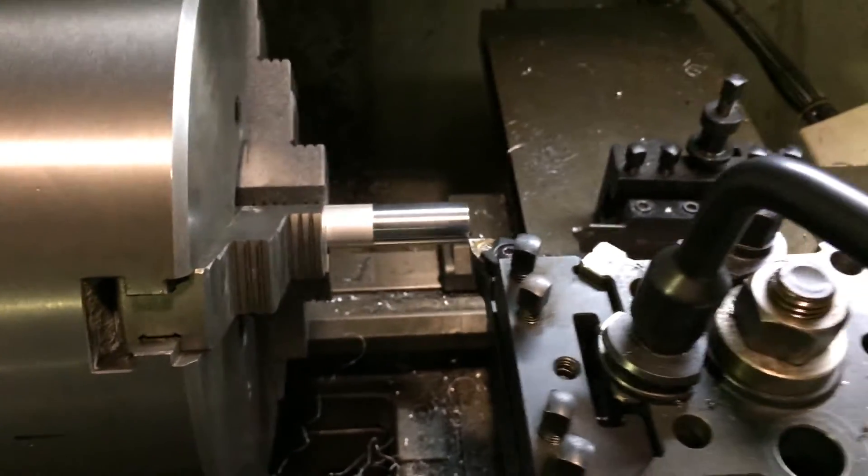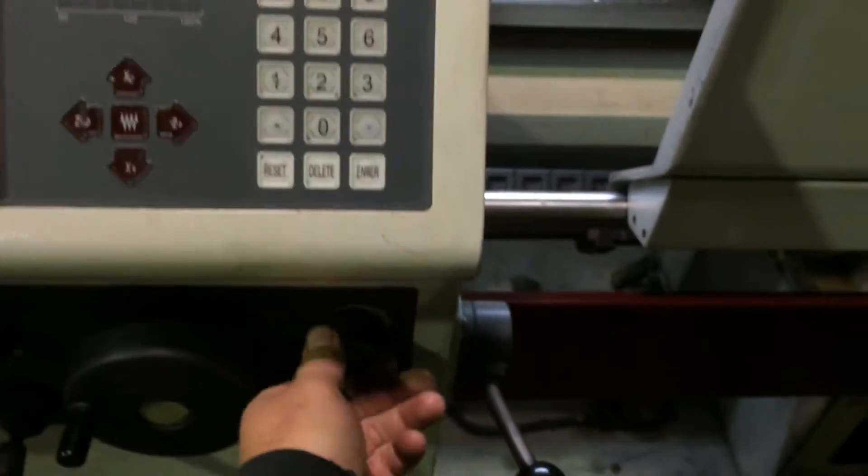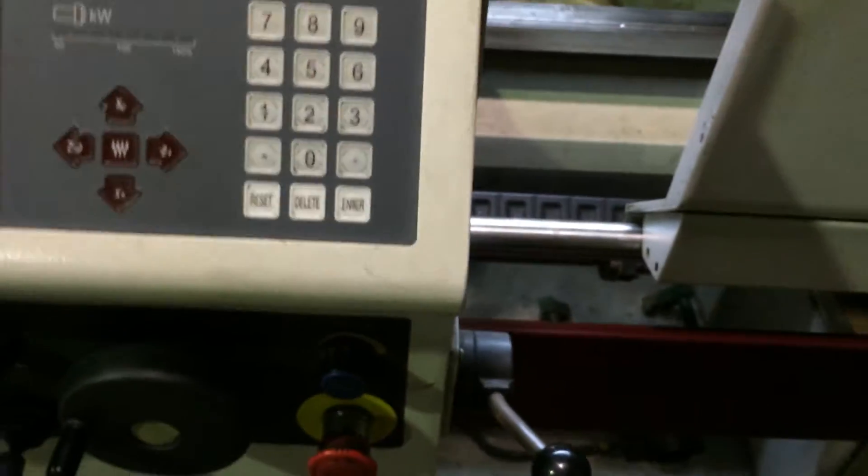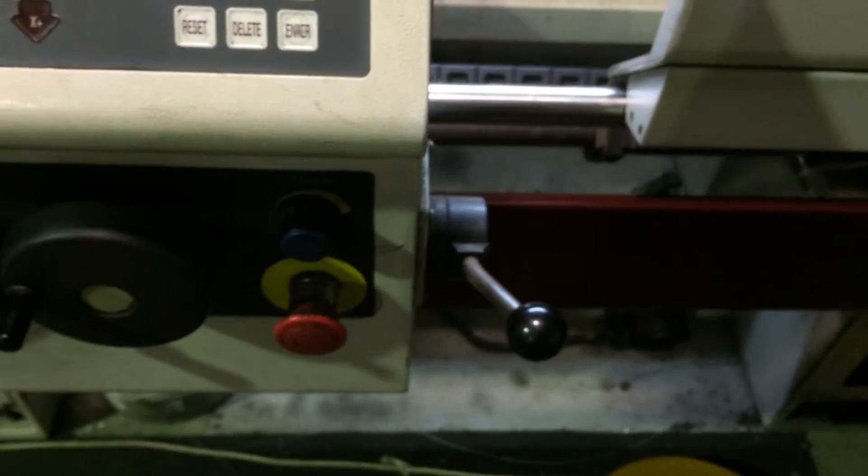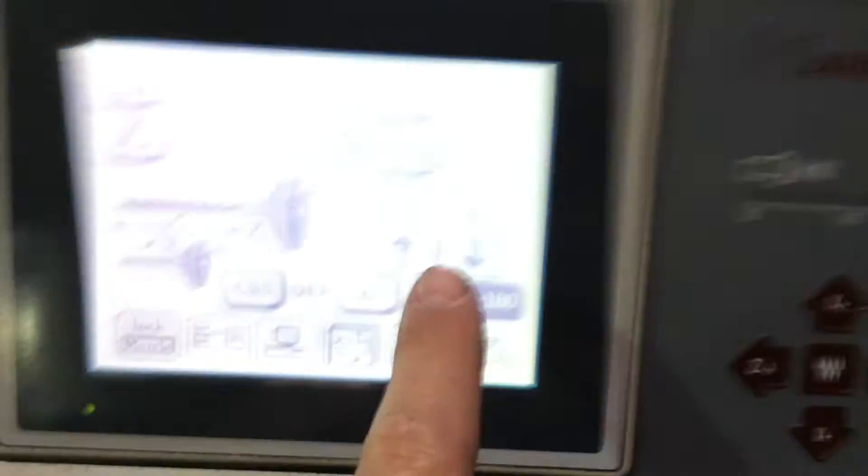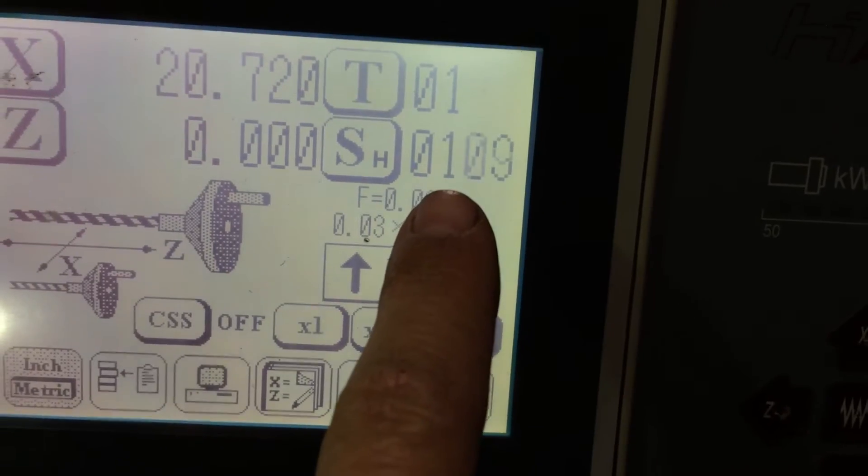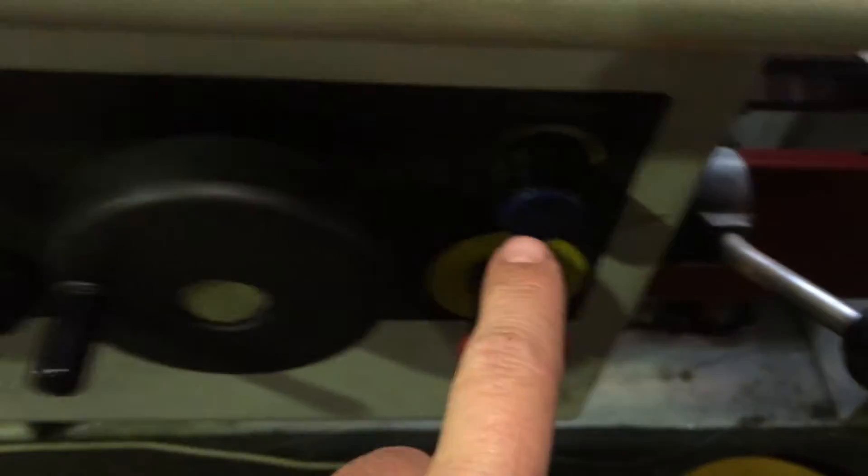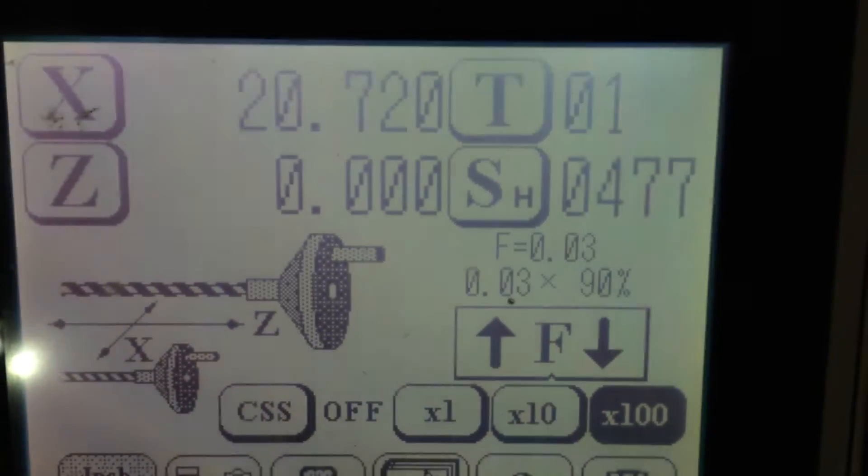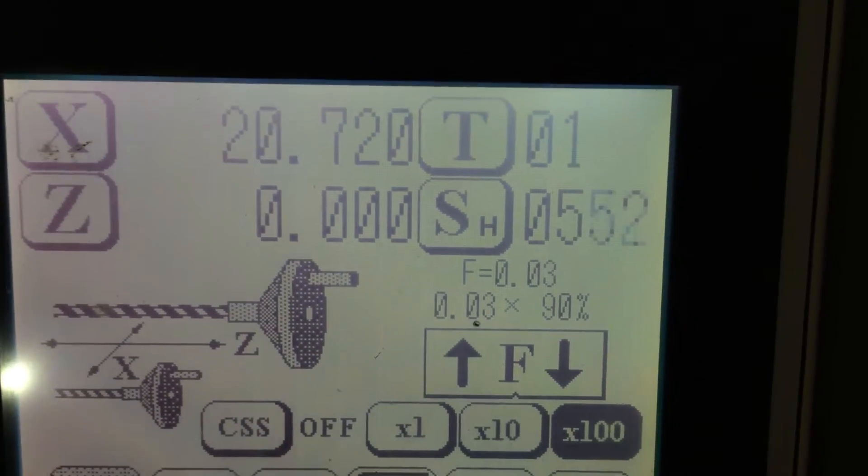First thing basically is we just want to take a fairly simple cut, so we just engage the spindle with this lever here, and we can see our spindle RPM readout here. This is our spindle speed pot, so we can increase spindle speed RPM accordingly.